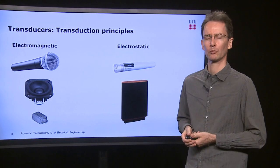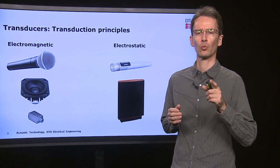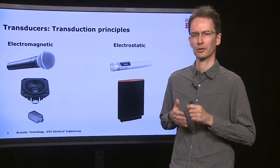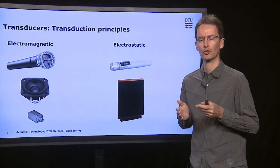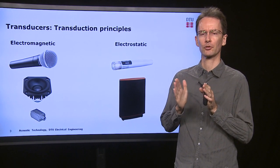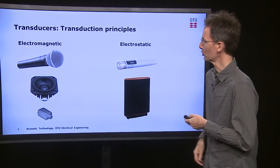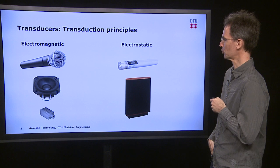One is electromagnetic, which basically uses the interaction of current in a wire that moves in a magnetic field. The other one is electrostatic, which is basically having a charged capacitor and then allowing one of the capacitor plates to vibrate. This can be used both for creating microphones and loudspeakers.